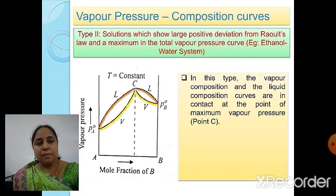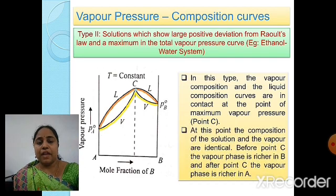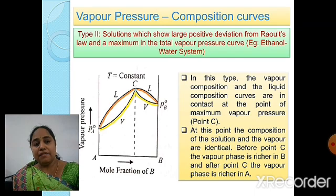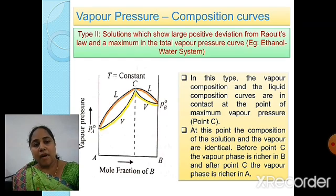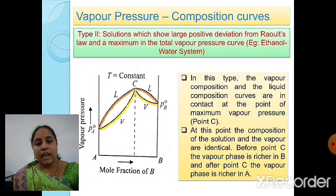In Type 2, the vapor composition and liquid composition curves are in contact at the point of maximum vapor pressure, point C. At this point, the composition of the solution and the vapor are identical — this is very important to note. Before point C, the vapor phase is richer in B, and after point C, the vapor phase is richer in A.